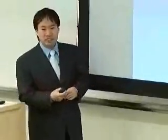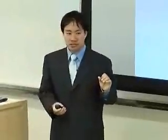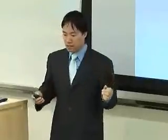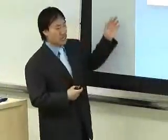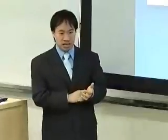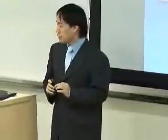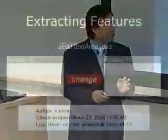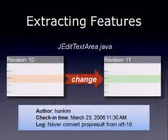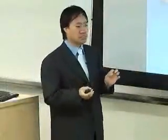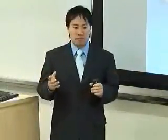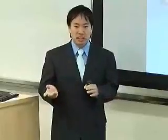Now we can label each change as either clean or buggy. The next job is to extract some features from a change. So suppose we have a change from revision 10 to revision 11. Obviously, there are textual changes inside, so we can extract textual information. Another thing we can think of is metadata — who made this change, and when: whether it happened early morning or afternoon, Monday or Saturday.